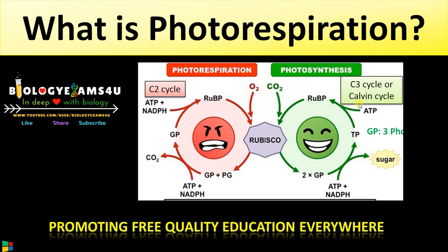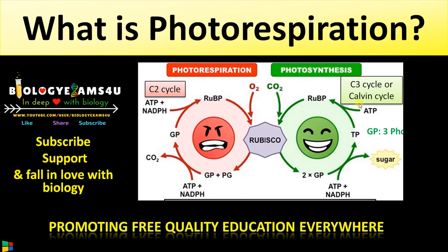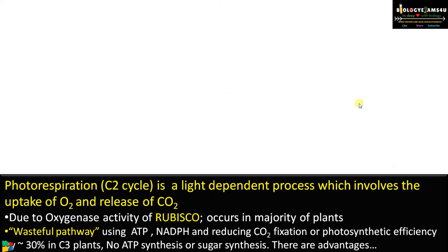Hi friends, welcome to biology exams4u.com. The topic of our discussion is photorespiration, the pathway which is also called the C2 cycle — advantages and disadvantages of photorespiration in plants within 5 to 10 minutes. If you are new to this channel, please subscribe and support this channel. Let's begin with the definition of photorespiration.